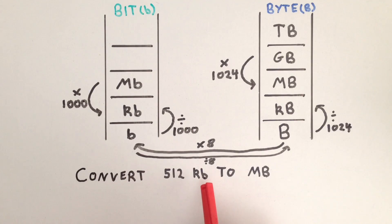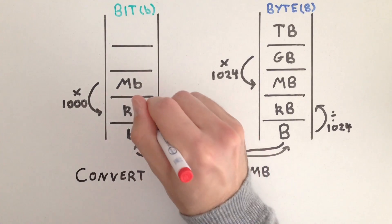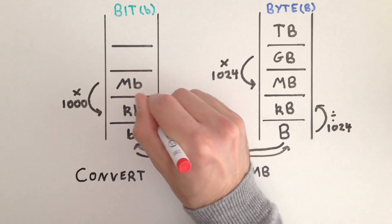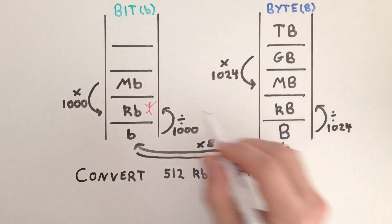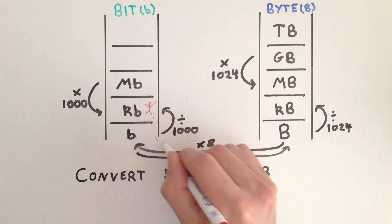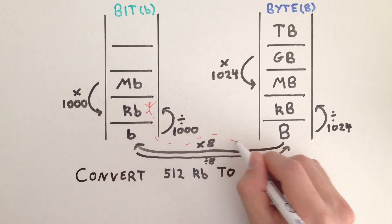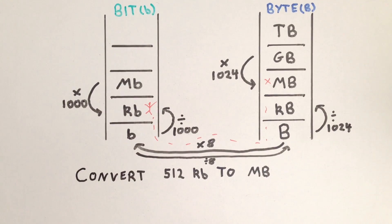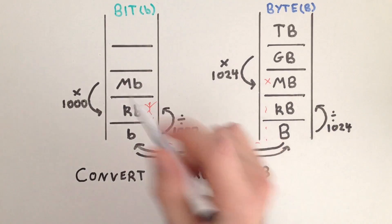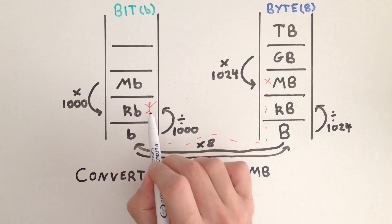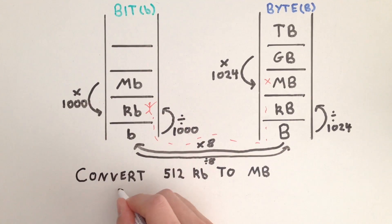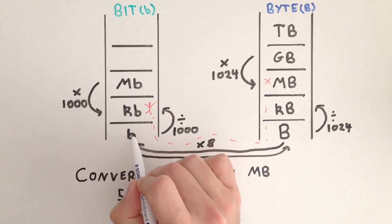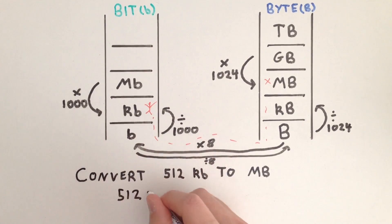We're converting from kilobits to megabytes, so we are here and we need to get to megabytes. So let's follow the numbers on the ladders. We're here, we need to drop down one level. So firstly, we write our number, 512. We drop down one level, so we times by thousands.